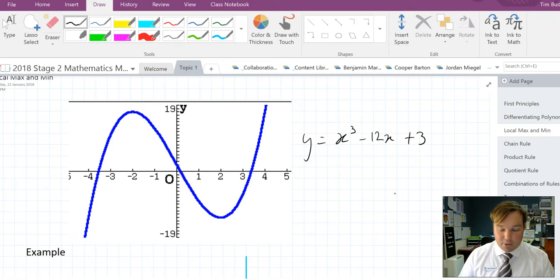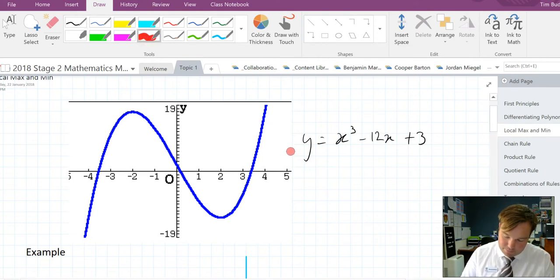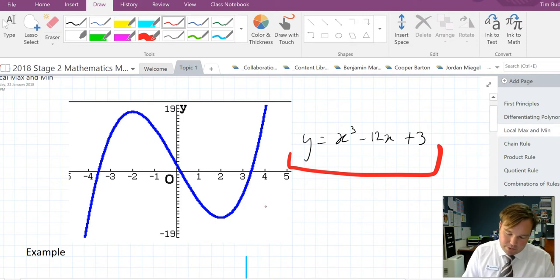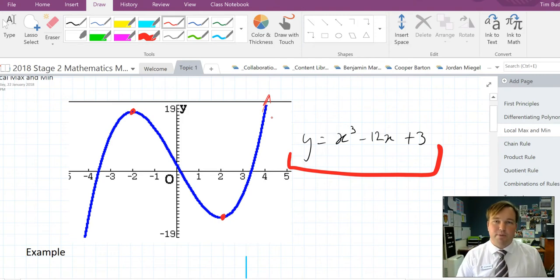Just reminding you what a local maximum and minimum are: if you have this cubic here, it looks like this. There is a local maximum here and a local minimum there. We call them local maximums and local minimums because globally this goes on forever, so therefore there is no true maximum because it goes up to infinity, same with no true minimum.